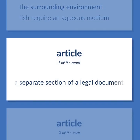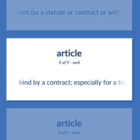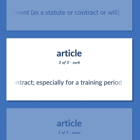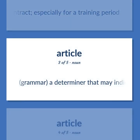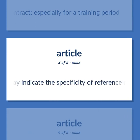Article (noun): A separate section of a legal document, as a statute or contract or will. Article (verb): Bind by a contract, especially for a training period. Article (noun, Grammar): A determiner that may indicate the specificity of reference of a noun phrase.